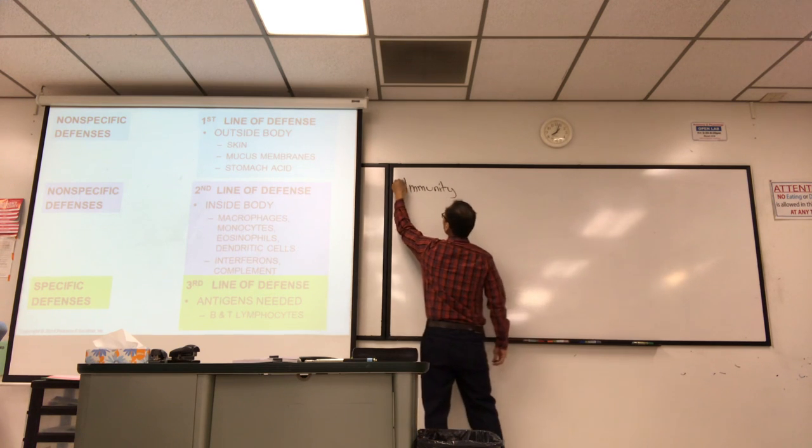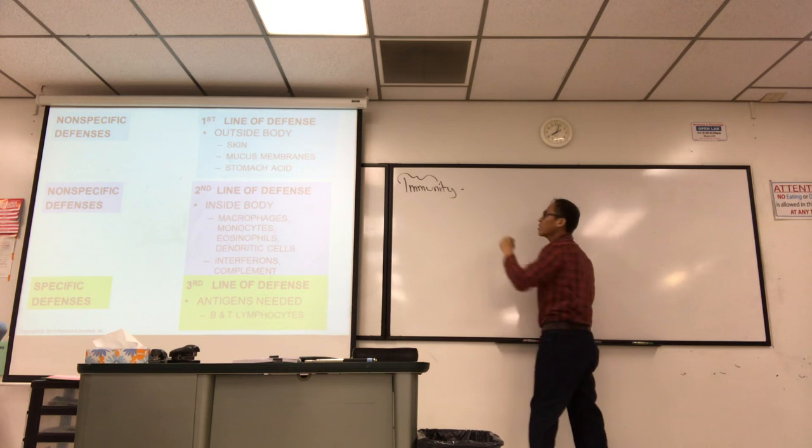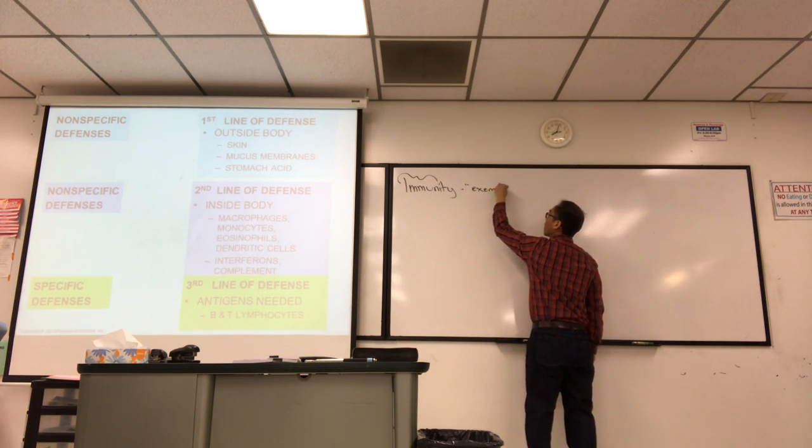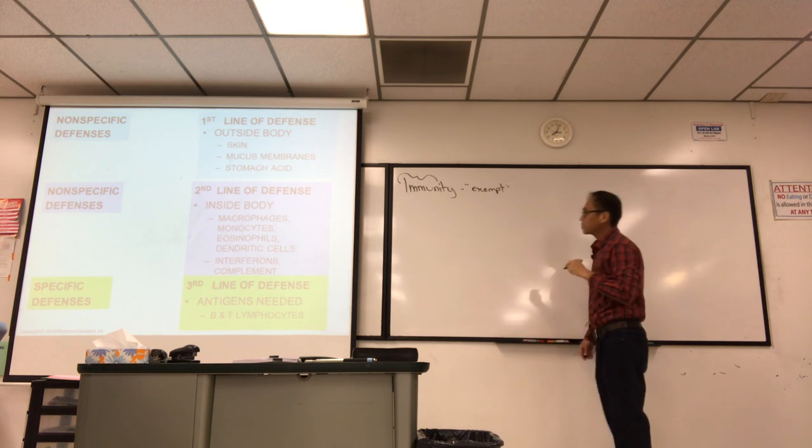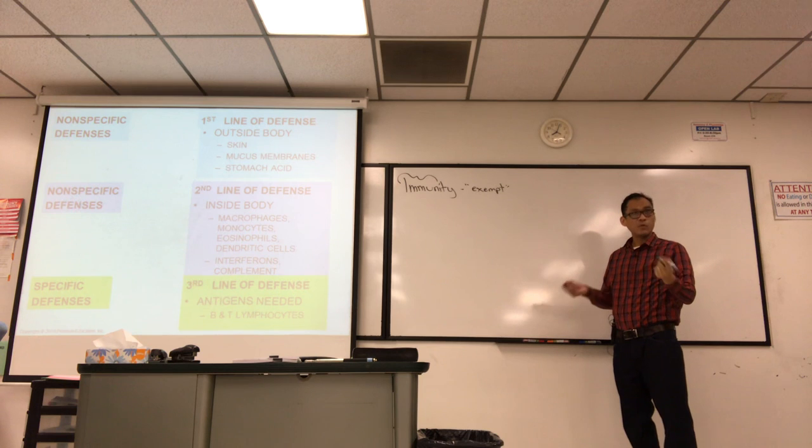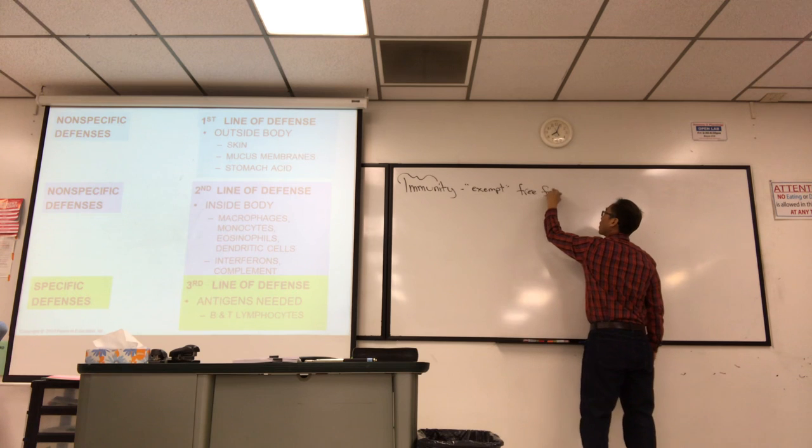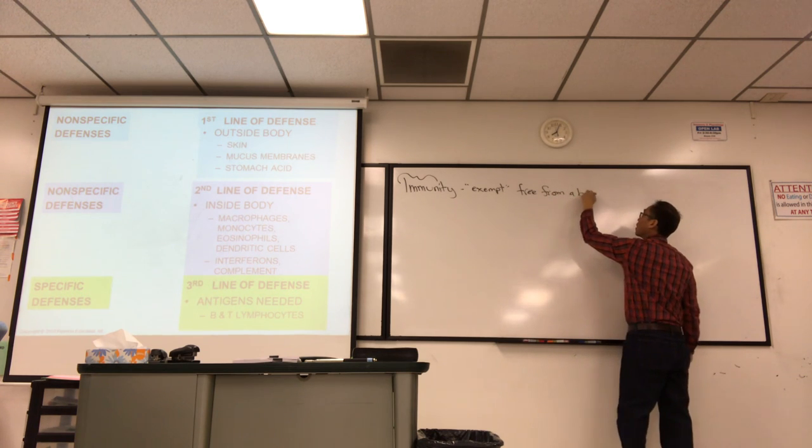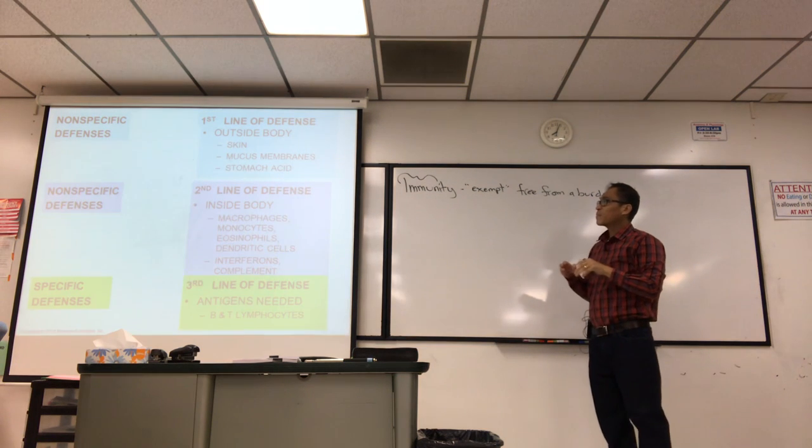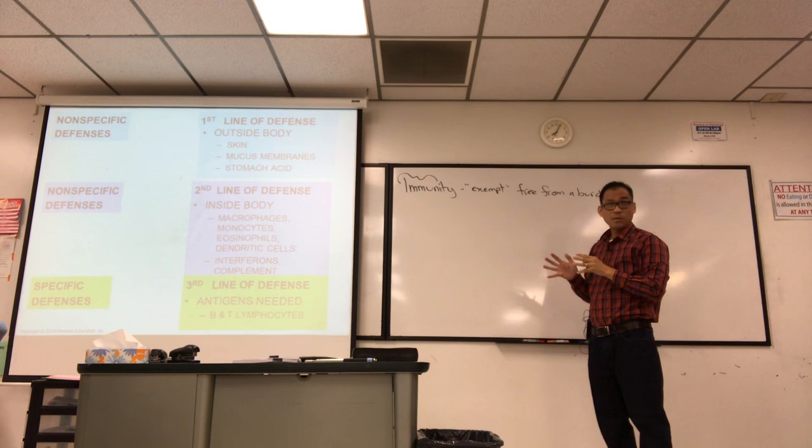Now, immunity. The word root immune means exempt, which implies you're free from a burden, you're immune to something. Studying it, basically the immune system works by a learning process.